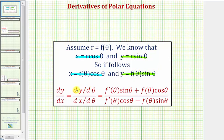And therefore, to find dy/dθ, we have to apply the product rule, which gives us this numerator here. We also have to apply the product rule to find dx/dθ using our equation for x, which gives us our denominator.